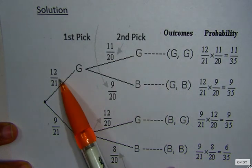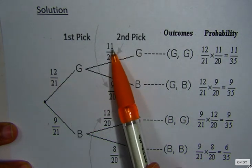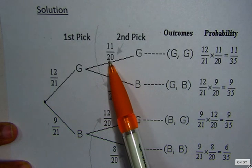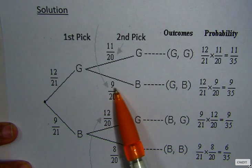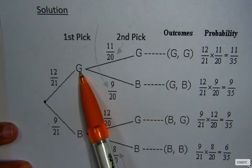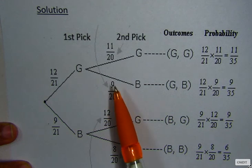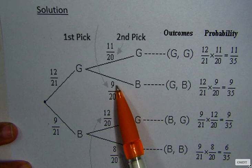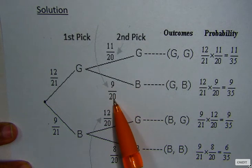For green, he has already picked one green, so there are only 11 left out of the new total 20. For blue, if he had picked a green the first time, there are still 9 blue because he hasn't picked any blue. So you have 9 out of the new total of 20.